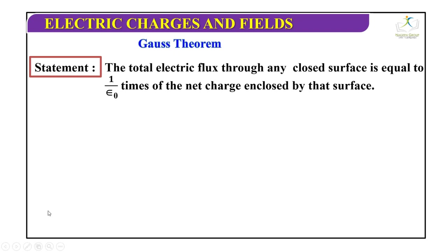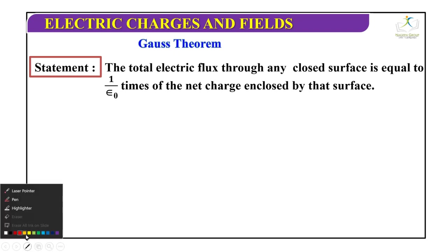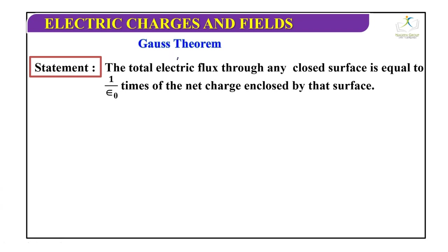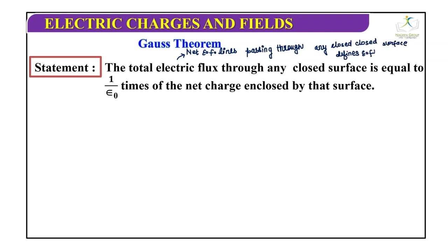The first word that comes to mind is: what is the meaning of electric flux? In the previous topic I explained briefly what electric flux is, but here I want to elaborate a little. Net electric field lines passing through any closed surface defines the term electric flux. If electric field lines pass through any particular surface area, the outcoming electric field lines we call as flux phi. So phi equals vector E dot S.